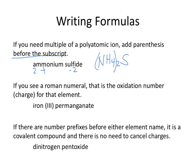If you see a Roman numeral, that's the oxidation number or the charge for that element. So iron(III) means that iron has a charge of plus 3. Permanganate is MnO₄ minus 1, and you're going to need three of those. So it'll be Fe(MnO₄)₃ — three of those permanganates, three times the negative one.